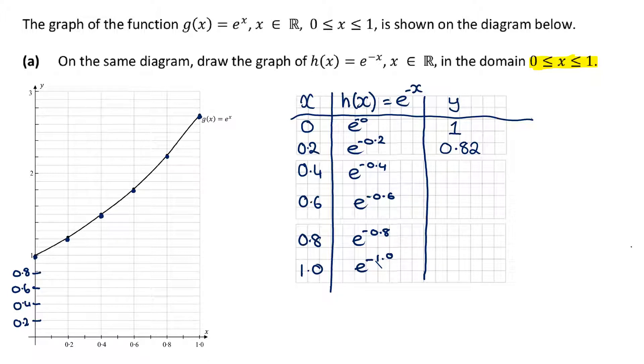We get 0.82 when we put that into the calculator with some rounding, 0.67 here, 0.55, 0.44, and 0.37.